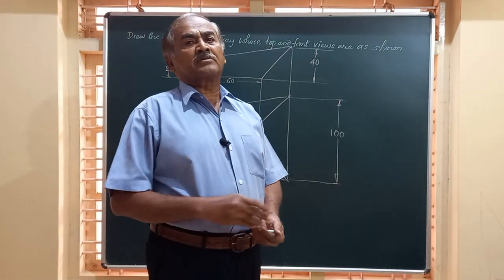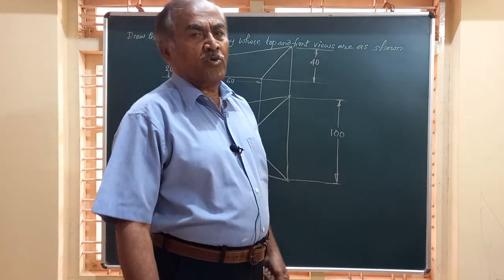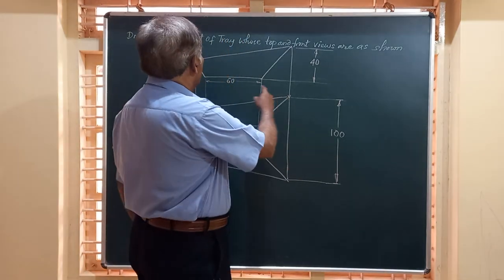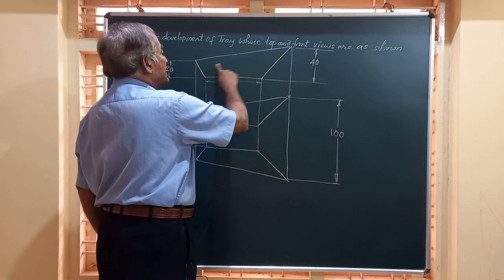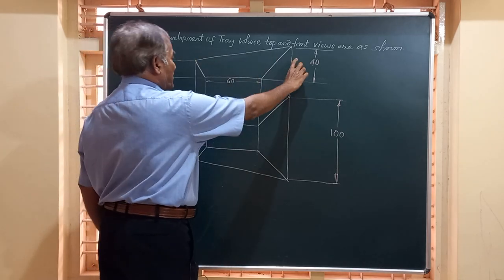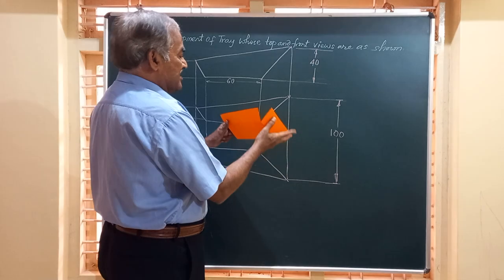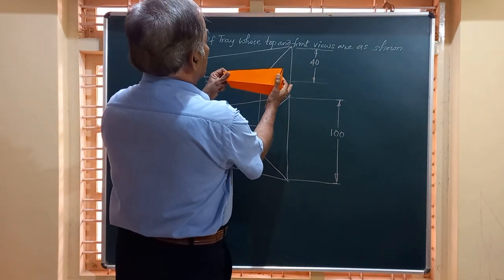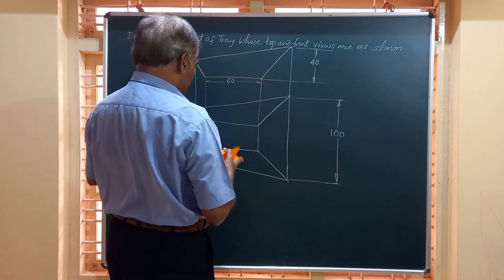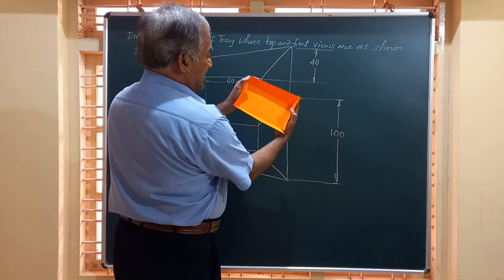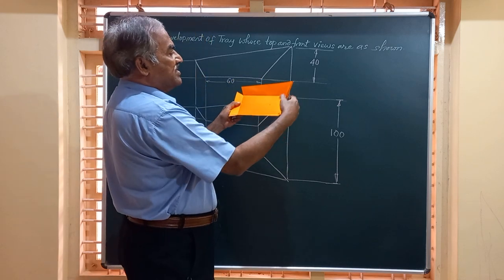Good afternoon, my dear friends. In today's video we are going to learn about the development of a tray which is inclined — an inclined tray having heights of 20 and 40 mm at the ends. This is how it looks: in the front view it appears as shown, and in the top view it is seen as an inclined rectangle — one for the bottom face and one for the top face.